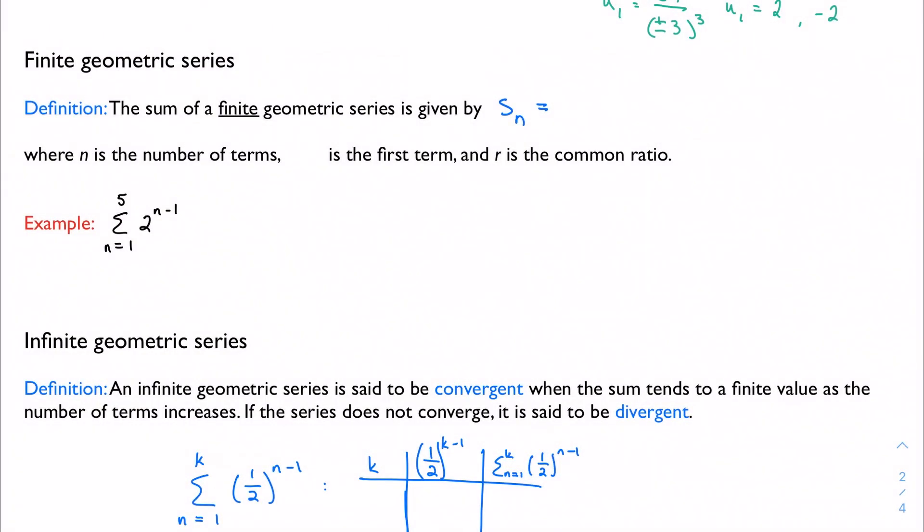We've talked about sequences, now we've got to talk about series. And with geometric series, we have to talk about two different types of series because infinite series and finite series are going to have some slightly different properties and we need to consider them both. We'll start with finite geometric series.